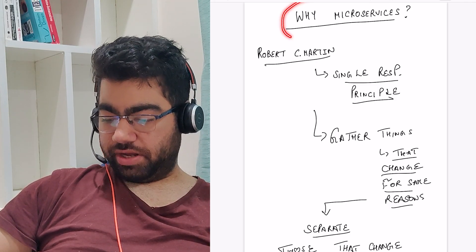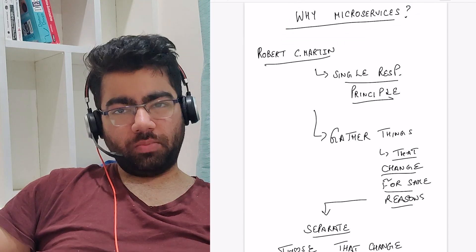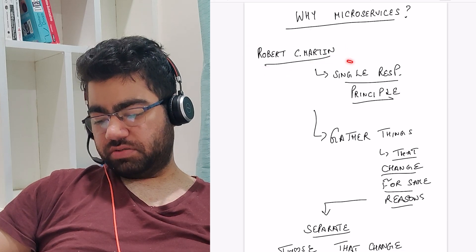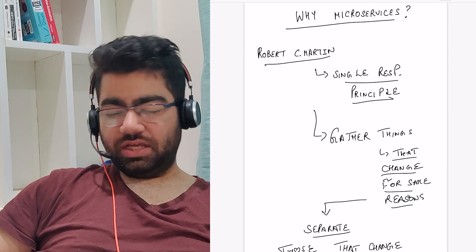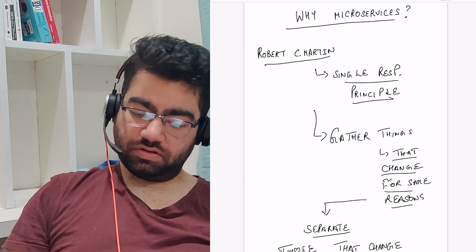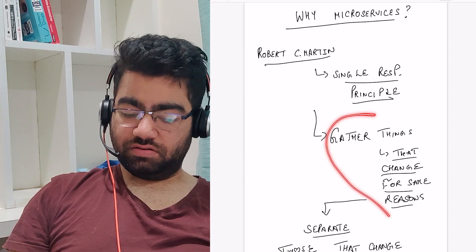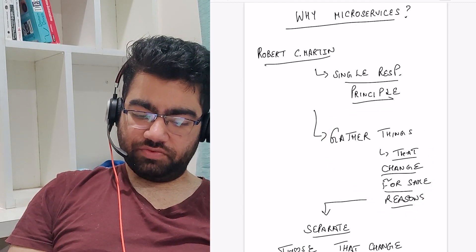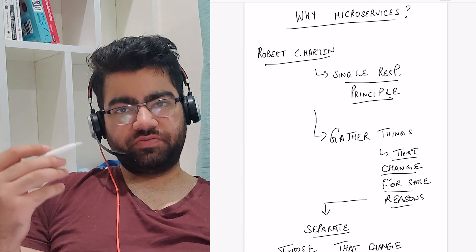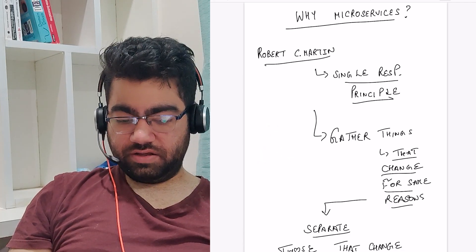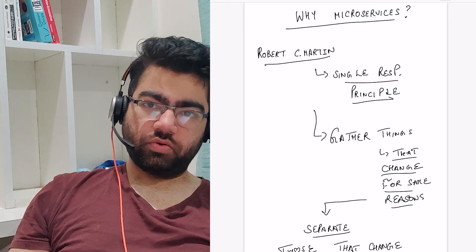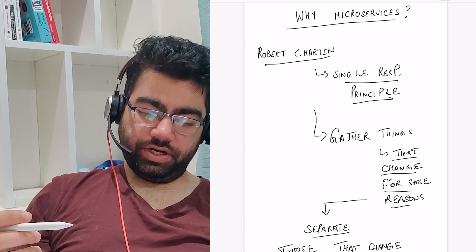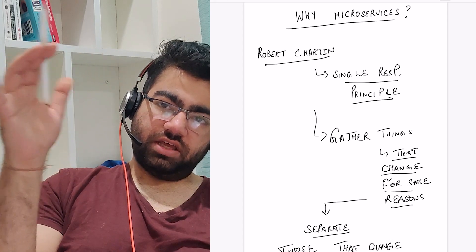Let's talk about why we need microservices and what the problem was. Robert C. Martin introduced a principle called the Single Responsibility Principle. It basically states: gather the things which change for the same reason, and separate those that don't. So we should keep all the things which change for a specific reason together, and those which have a completely different use or function, we keep them separate.